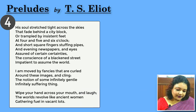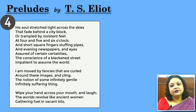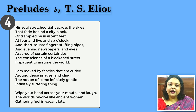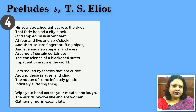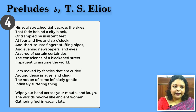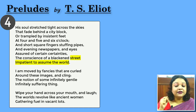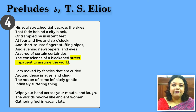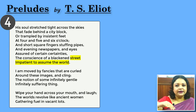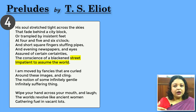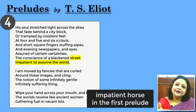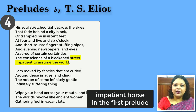'The conscience of a blackened street, impatient to assume the world.' While on one hand we have people assured of certainties, on the other hand that street is getting impatient — it has suffered through all these masquerades, through all this trampling. You can equate this impatience with the impatience of the horse in the first stanza, and this is how he comes back to the first part of the poem.